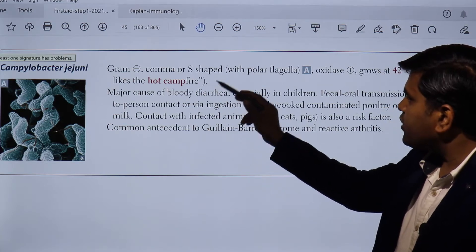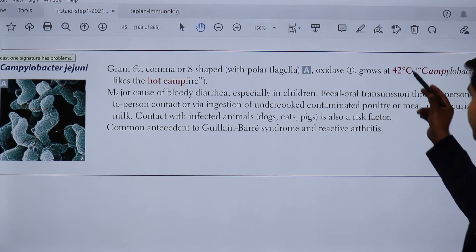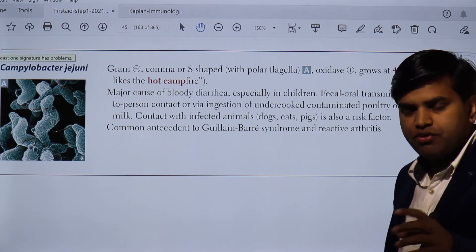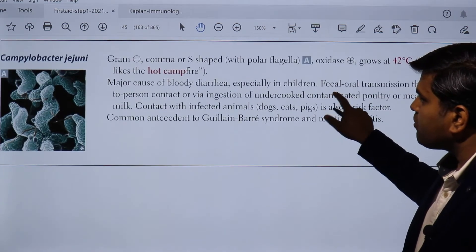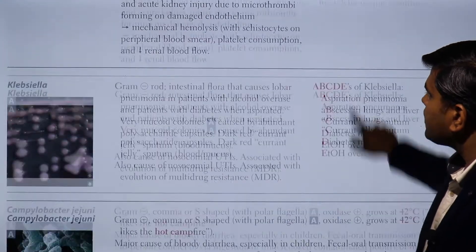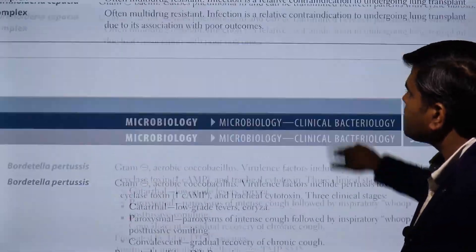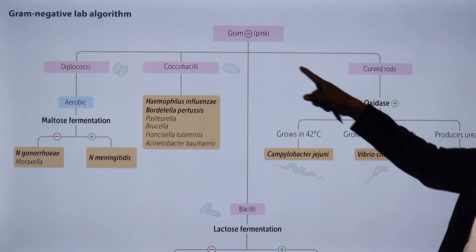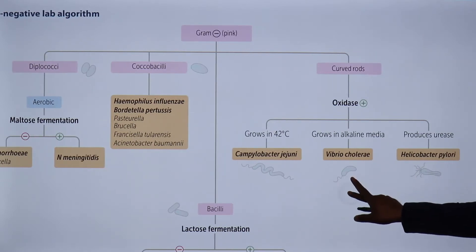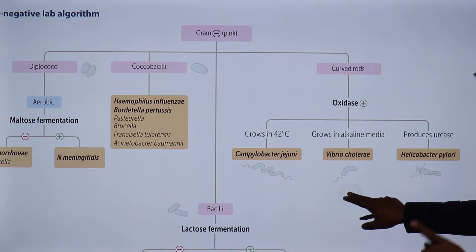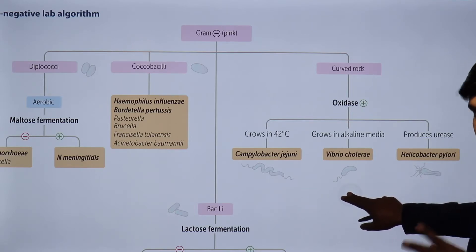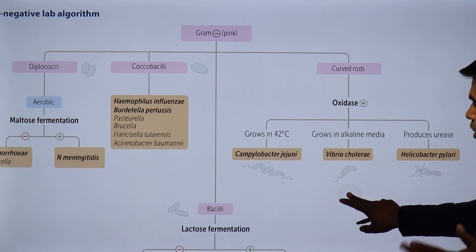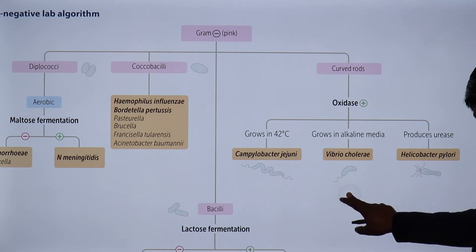Campylobacter jejuni is gram-negative, comma or S-shaped with polar flagella, and oxidase positive, but grows at 42 degrees Celsius — campylobacter likes the hot campfire. Among curved gram-negative rods, there are three organisms: Campylobacter, Vibrio cholerae, and Helicobacter pylori. They are all oxidase positive and gram-negative curved rods. Campylobacter jejuni grows at 42°C where others don't; Vibrio cholerae grows in alkaline environments; and Helicobacter produces a rapid urease test.